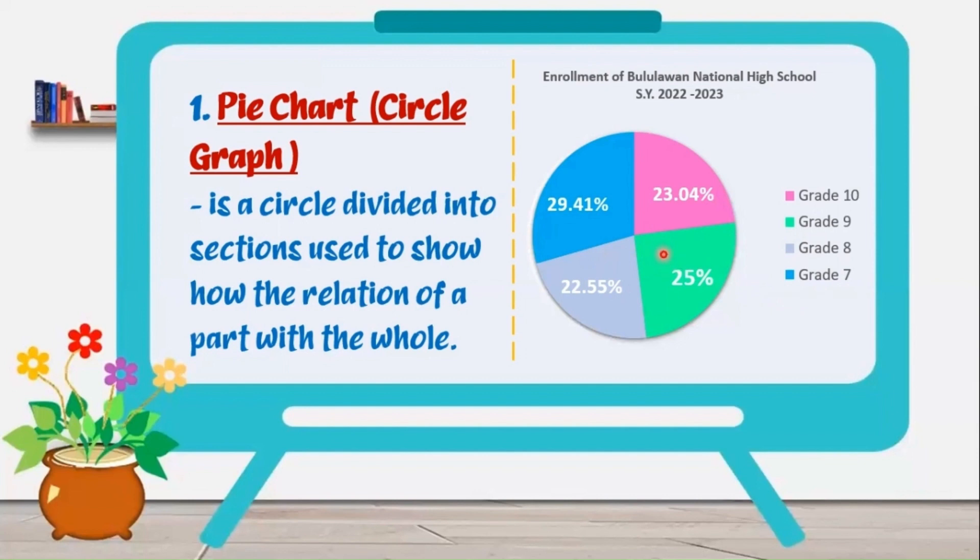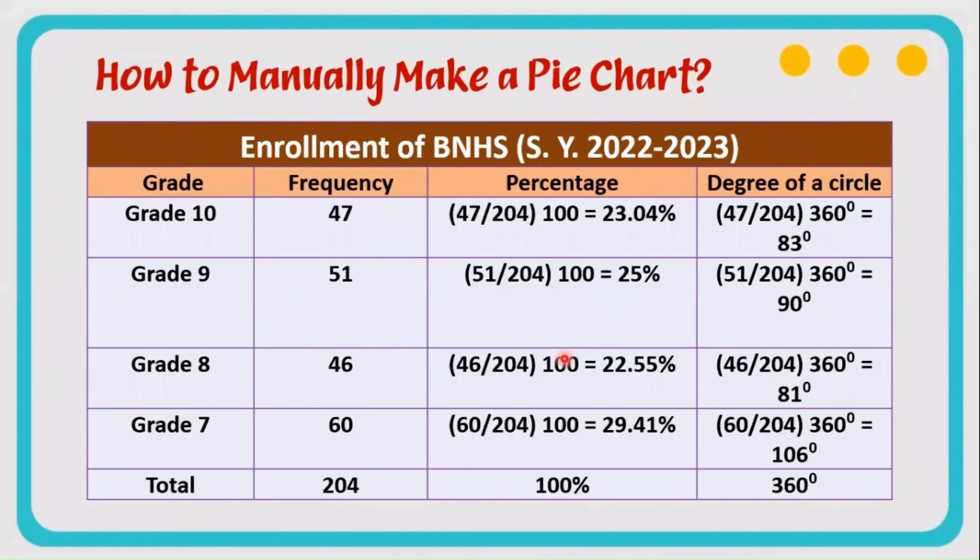How are we going to make this graph? How do we know that grade 8 is 22.55%? I used Microsoft Excel to make this graph, so it is very easy. It will reflect directly. But how are we going to make a pie chart manually?